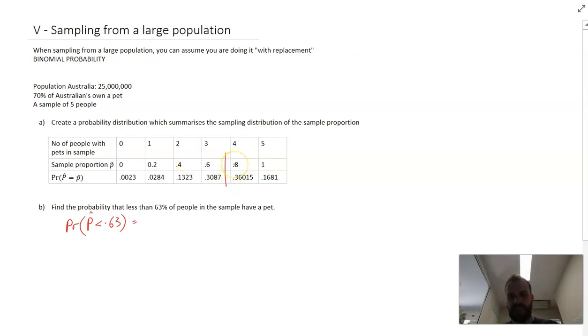So having a proportion of 0.8 isn't included. So just adding that number, that number, that number, and that number is going to give me the probability that the sample proportion is less than 0.63. This is an answer of 0.4717.